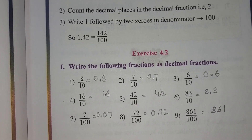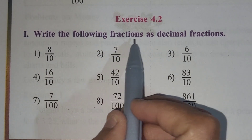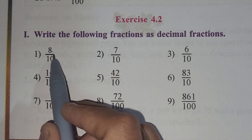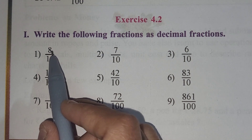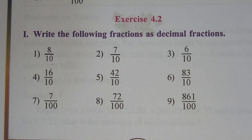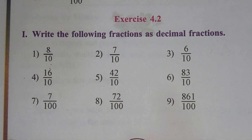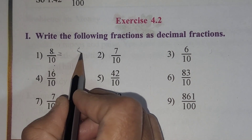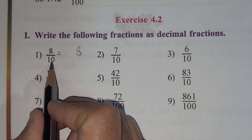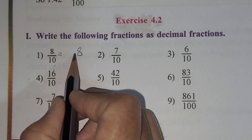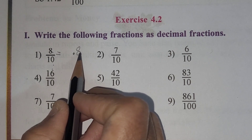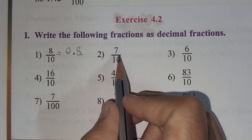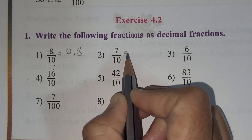Today we are going to solve examples from exercise 4.2 — writing fractions as decimal fractions using the same method. First, if you see 8 by 10, how are you going to convert this into decimal form? We write numerator 8 as it is. In 10, how many zeros are there? One. So we put the decimal point after one digit. There's no number before it, so we add 0 — the answer is 0.8.